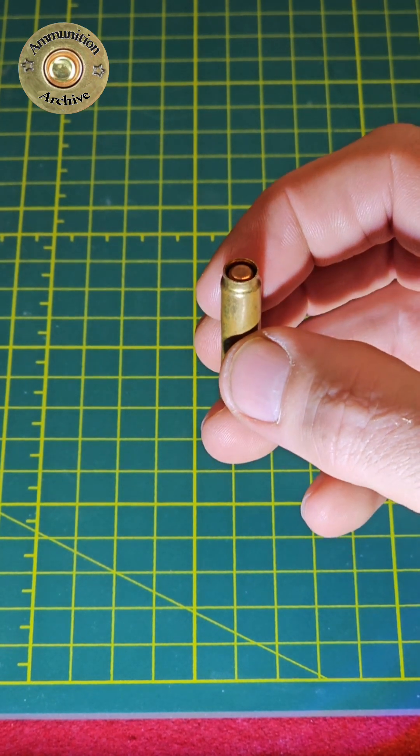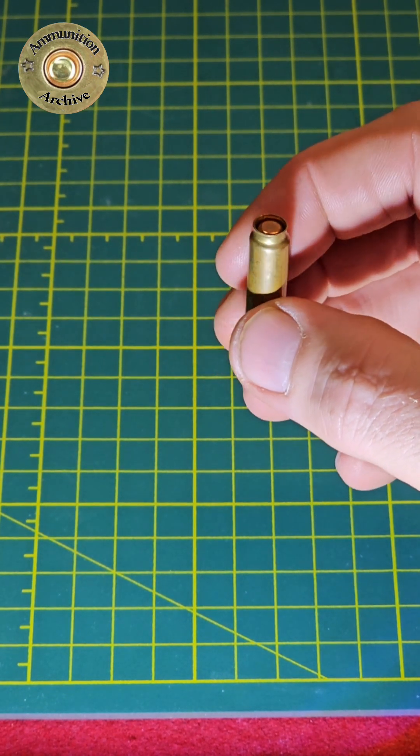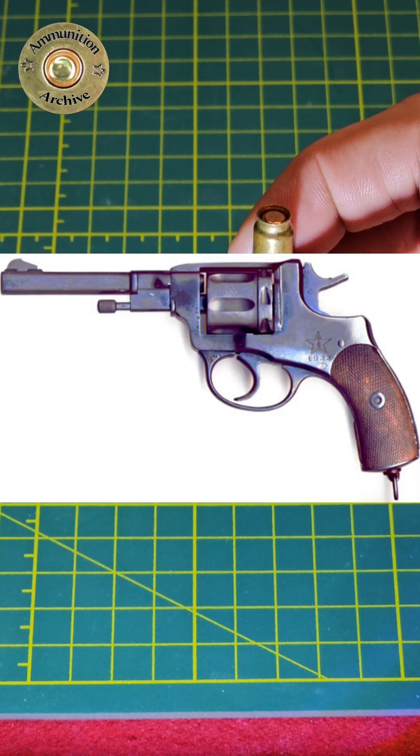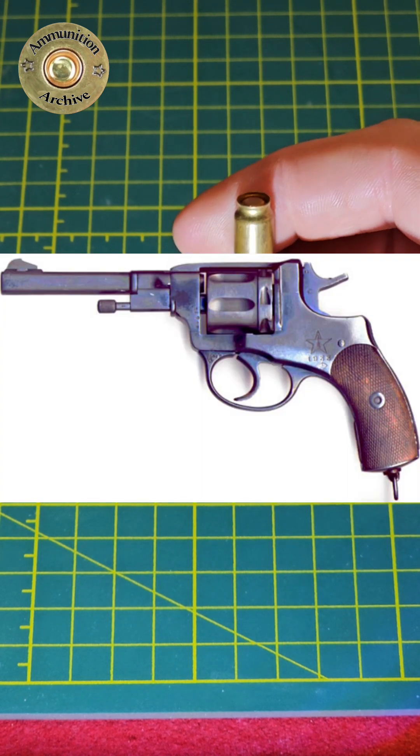Now this round was produced in 1895, and it was designed to be used in the M1895 Nagant revolver.